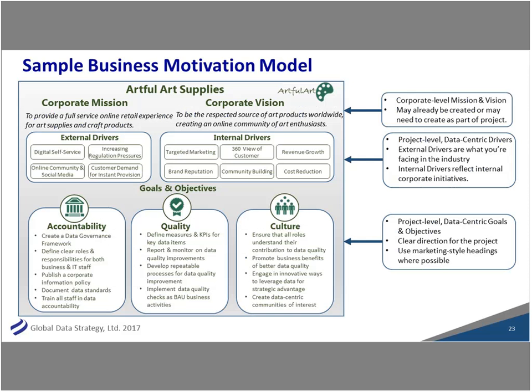Here's an example of a motivation model in infographic form showing mission, vision, internal and external drivers — in this case for a data governance initiative. The key areas are driving accountability, quality, and culture. The most important thing is we're all driving in the same direction. This is the why of any enterprise architecture program. Make sure you're not just talking to yourself — did you talk to marketing, the brand strategy group, the customer service group? All these different stakeholders need to be involved.